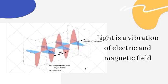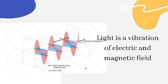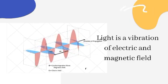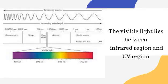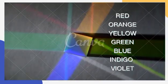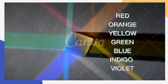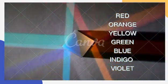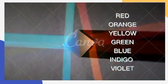Light is also a vibration of electric and magnetic fields. The electromagnetic spectrum is where light lies, between the infrared region and the ultraviolet region. When light strikes a prism, it forms different colors such as red, orange, yellow, green, blue, indigo, and violet.